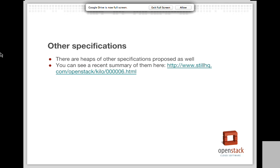There are a lot of other specifications already approved for Kilo, and even more out there for review at the moment. The URL on this slide — which I'll put in the description — is a summary of the specifications that are currently being proposed or have been approved, which I try to update every month or so. I think it's on the order of 140 proposed changes to Kilo at the moment. So if you're interested in a specific hypervisor driver or the things we're talking about doing to the scheduler, this blog post would help you find out what we're currently proposing.